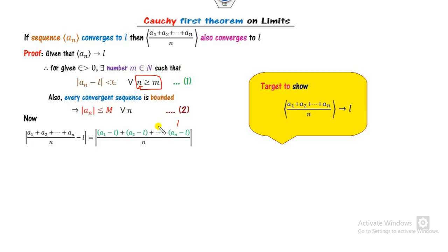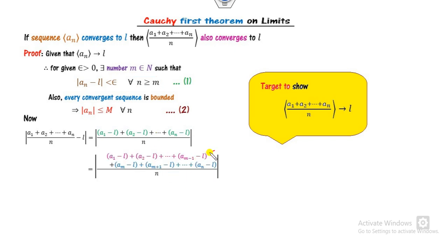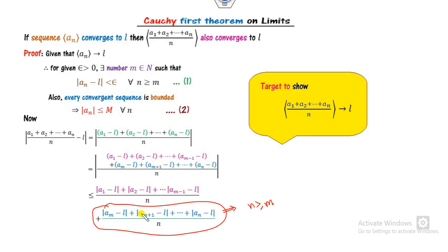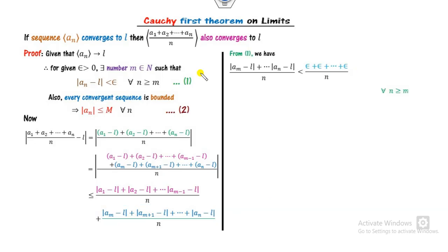There are terms with indices less than m and terms with indices greater than or equal to m, so I bifurcate them accordingly. Applying the triangle inequality, for the part where n is greater than or equal to m, equation 1 is applicable — so each term |a_n − l| is less than epsilon. Summing those terms, this part is less than epsilon.